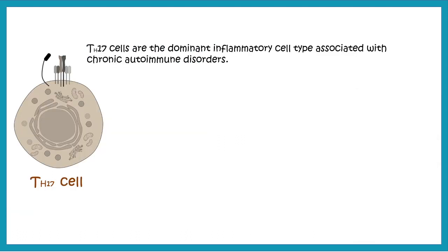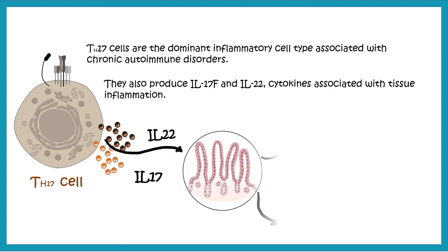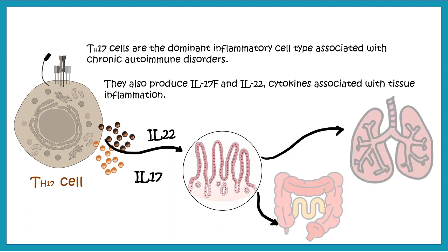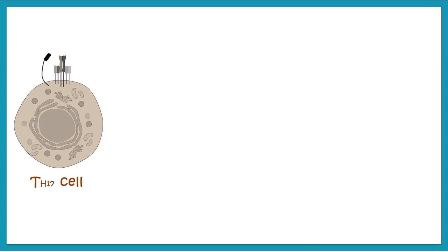TH17 cells are dominant inflammatory cells associated with chronic inflammatory bowel disease and many other autoimmune diseases. They can secrete IL-17 and IL-22, cytokines associated with tissue inflammation. TH17 cells are mainly found in mucosal tissues of the intestinal lining and the lungs.